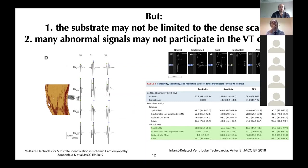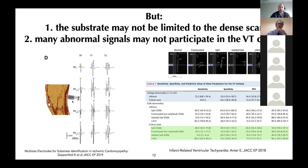Some things we now know fit well with what we were thinking: the substrate may not be limited to the dense scar, and many abnormal signals may not play any relevant role in the VT circuit. An experimental model of myocardial infarction in swine, led by Katia Zeppenfeld in Leiden, had histological samples of all mapping points. It clearly shows preserved myocardium within an area of fibrosis, representing a potential channel — but if you map that region in sinus rhythm, the abnormal signal will be hidden inside the far-field component from surrounding healthy myocardium.